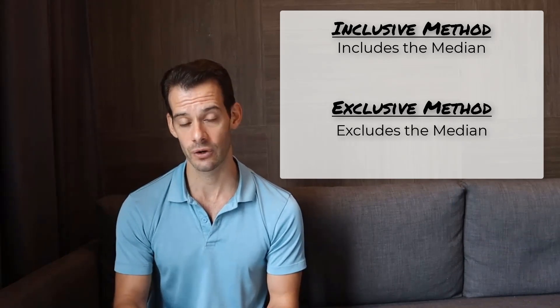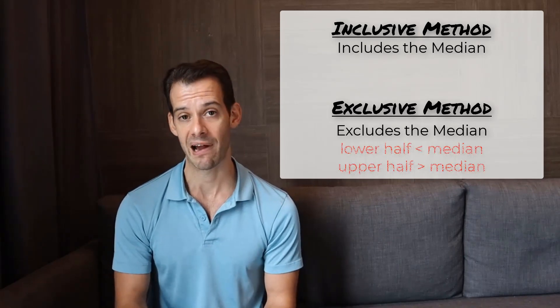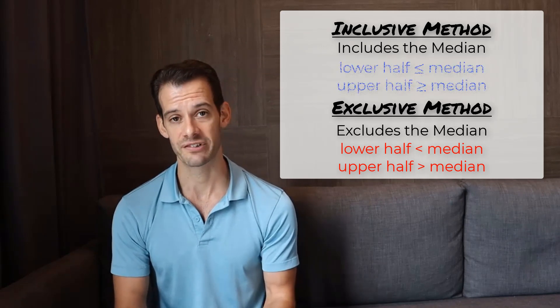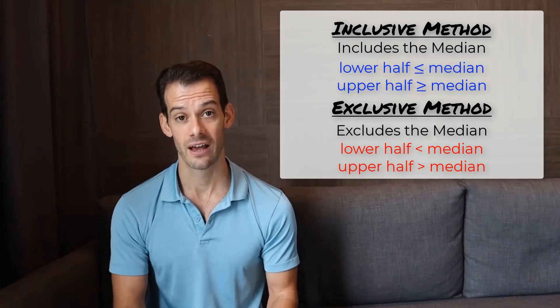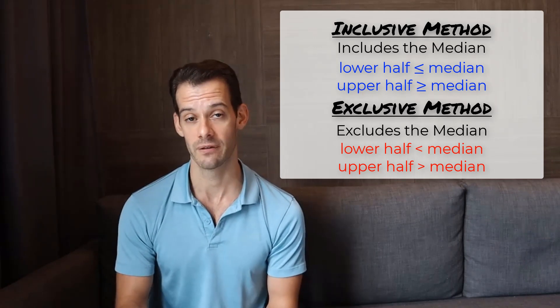Now if we're excluding the median, what we're really saying is that the lower half of the data is less than the median and the upper half is greater than the median. But if we're using an inclusive method, what we're saying is the lower half of our data is less than or equal to the median and the upper half of the data is greater than or equal to the median.